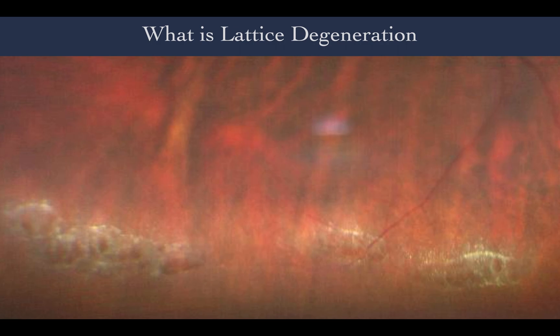The three most common post-mortem histology findings of lattice degeneration are retinal thinning, vitreous liquefaction overlying the retina, and a tight vitreoretinal adhesion at the margin of the lesion.